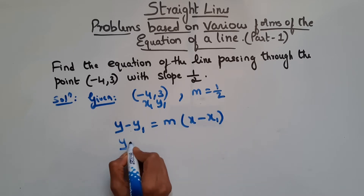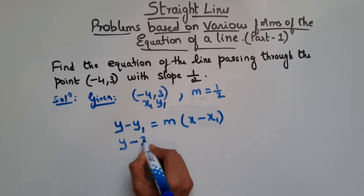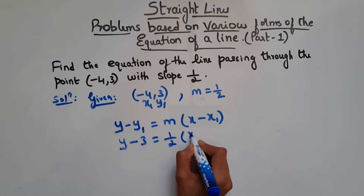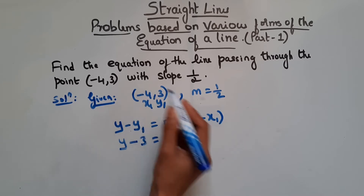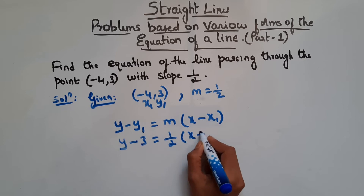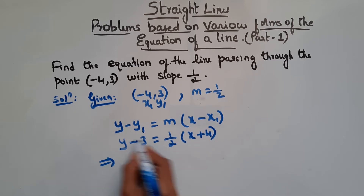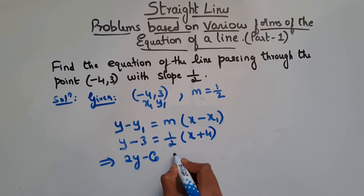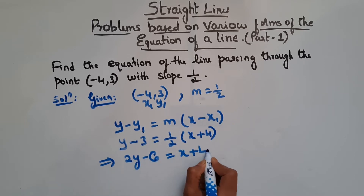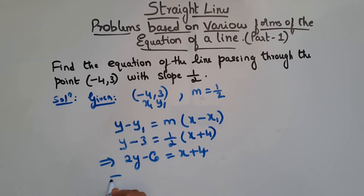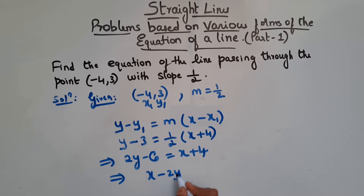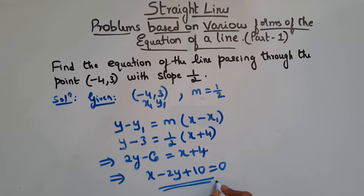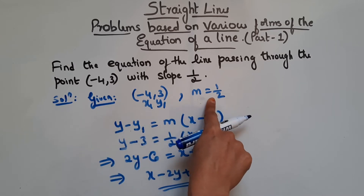So let's substitute here. So y - 3 = (1/2)(x - (-4)), which is x + 4. Multiplying through by 2: 2y - 6 = x + 4. Rearranging, this implies x - 2y + 10 = 0. So this is the equation of the line which passes through this point with slope 1/2.